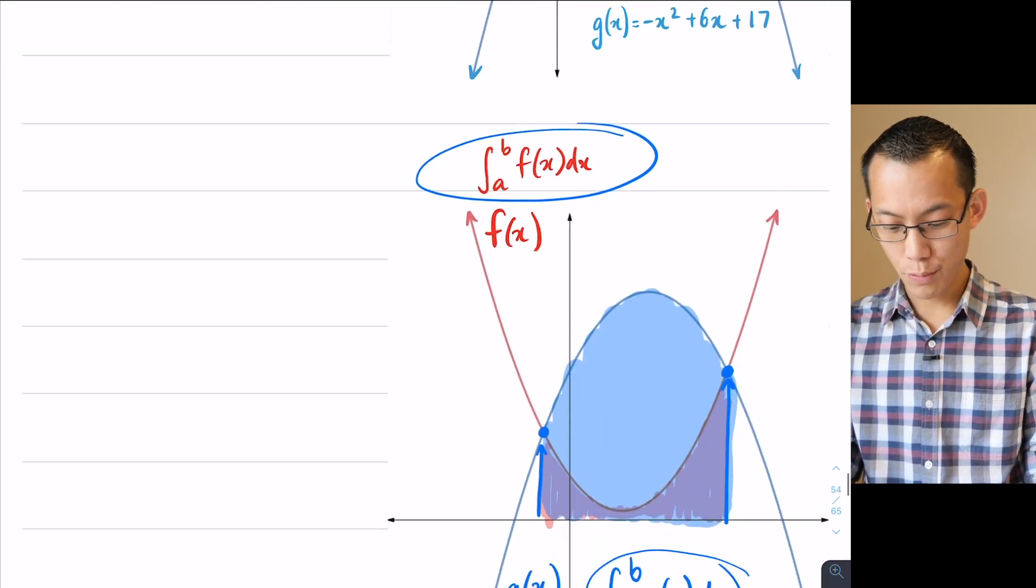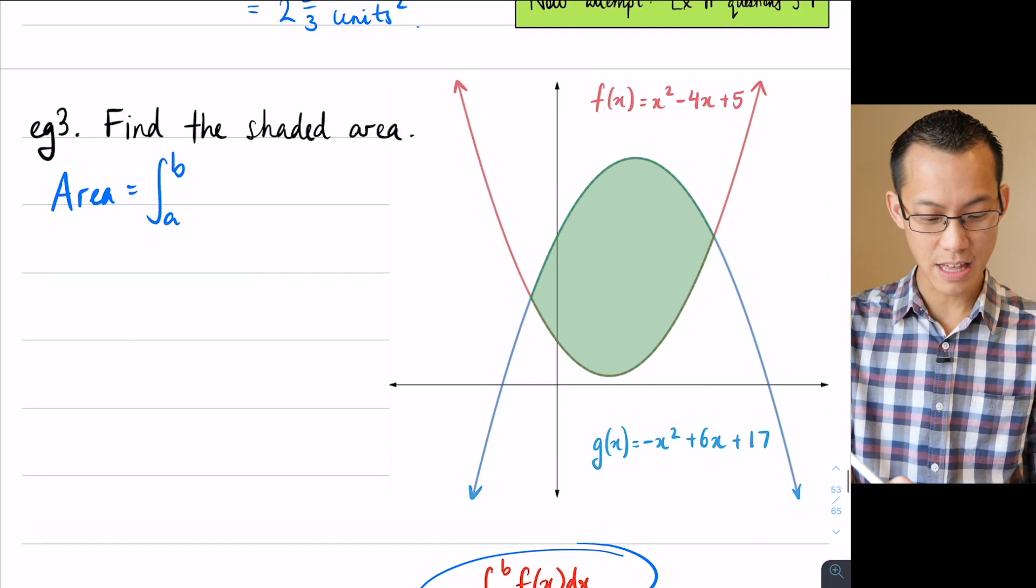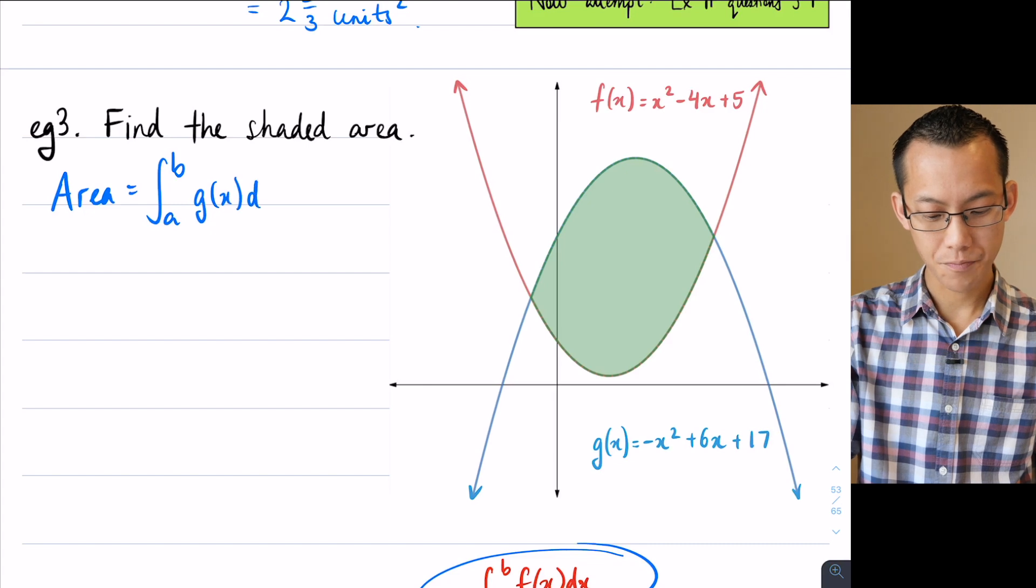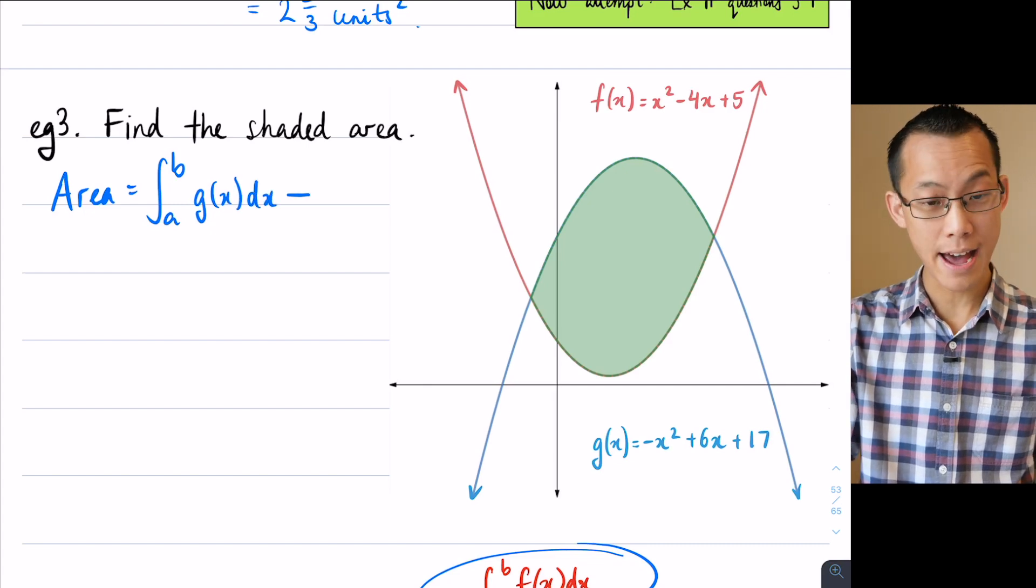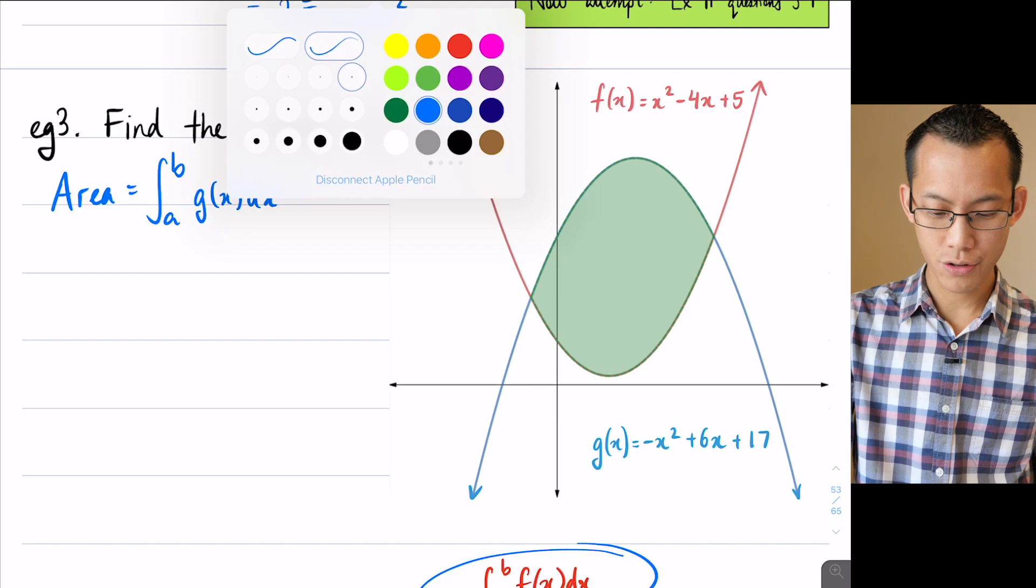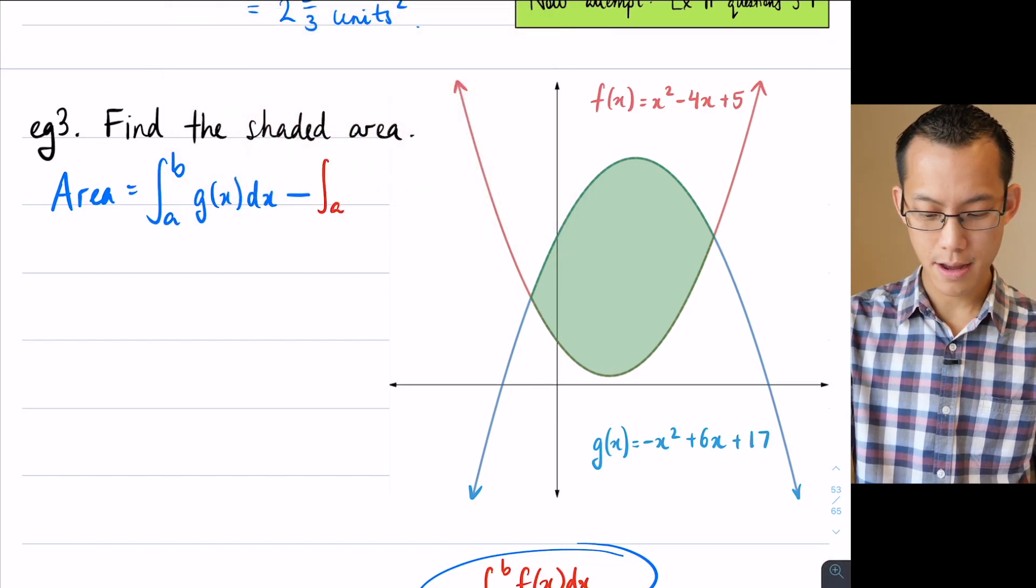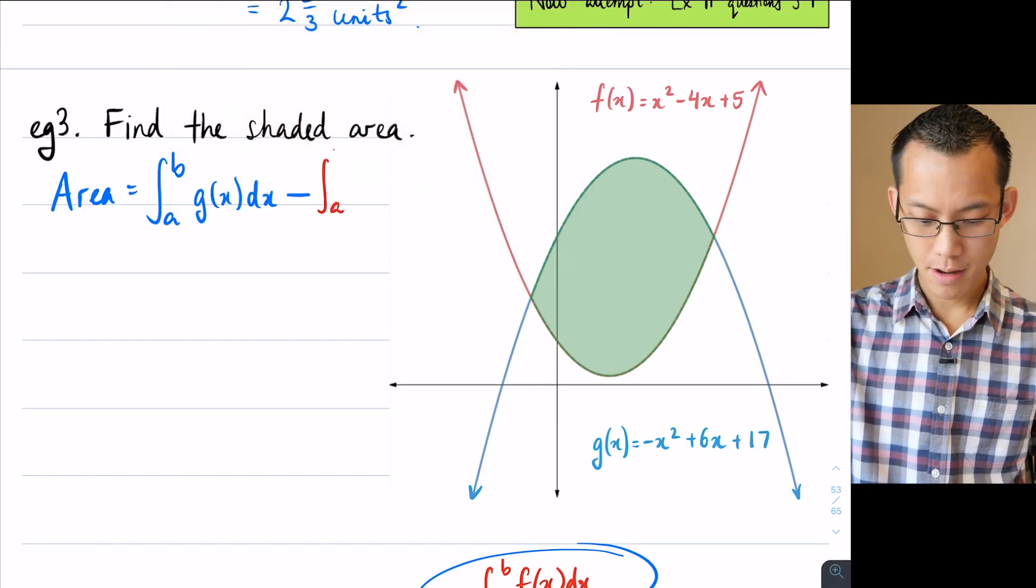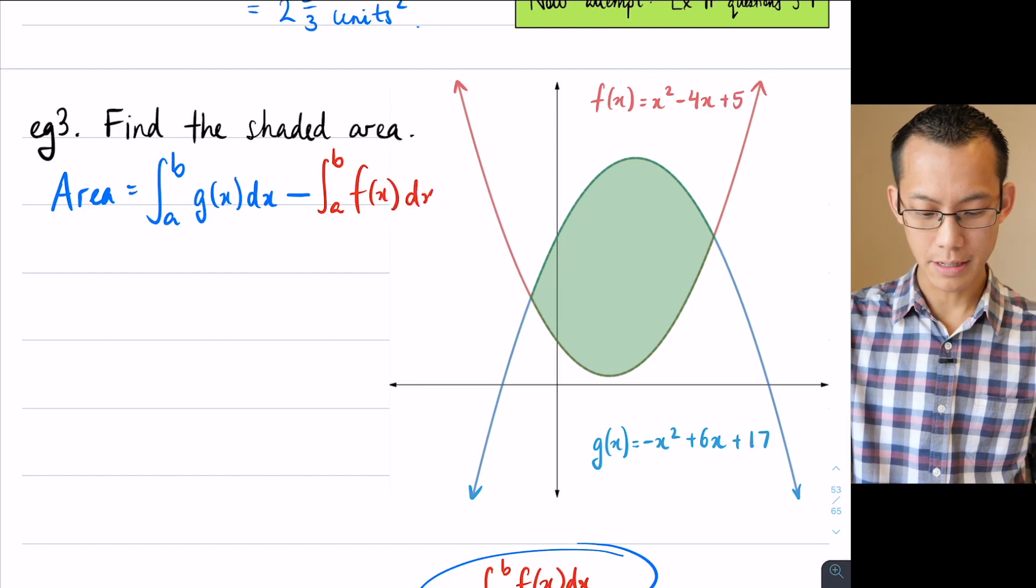Of the blue one, we're going to do the blue one take away the red one, right? So that's going to be g of x dx. And I'm going to subtract the red area. Let's transition colors. So from a to b, f of x dx.